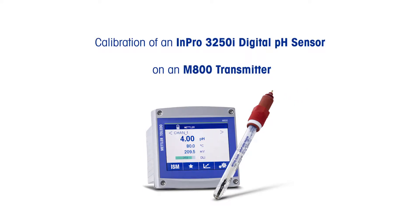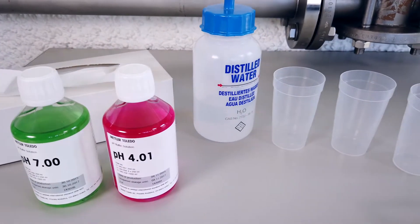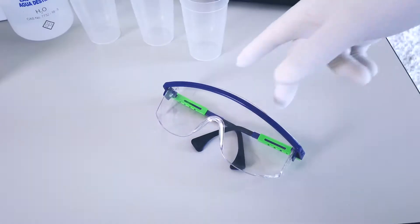Here's how to do a two-point calibration on a Mettler Toledo NPRO 3250i digital pH sensor using an M800 one-channel transmitter. For a two-point calibration use pH 4 and pH 7 buffers.